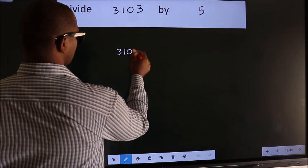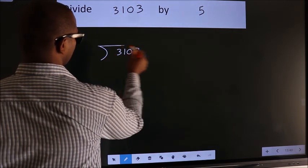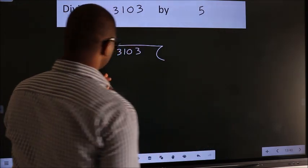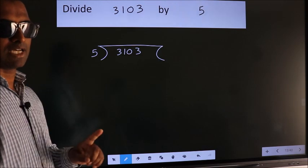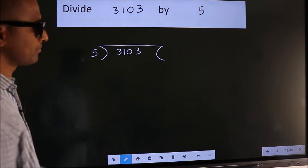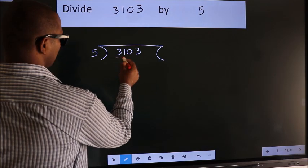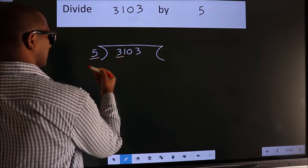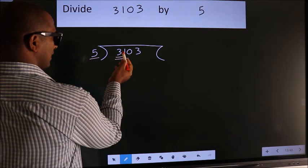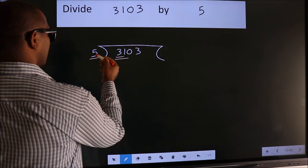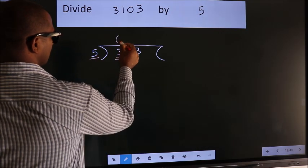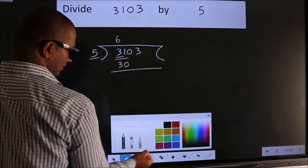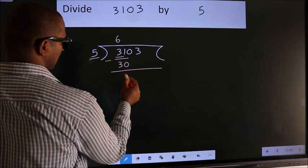3103 here, 5 here. This is your step 1. Next, here we have 3, here 5. 3 is smaller than 5, so we should take 2 numbers: 31. A number close to 31 in the 5 table is 5×6=30. Now we should subtract, we get 1.